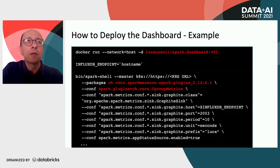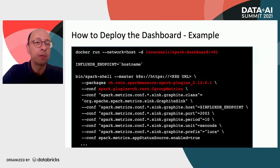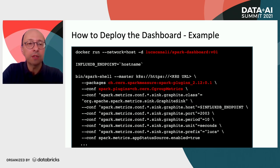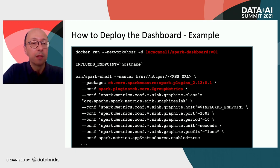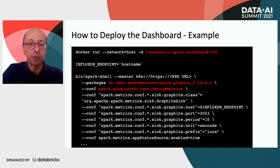In this slide, you can see how to put all this together in an example. You can run the Docker container with the infrastructure, and then run your Spark shells, Spark Submit, or PySpark with the additional instrumentation that will show up.